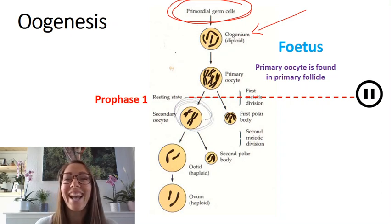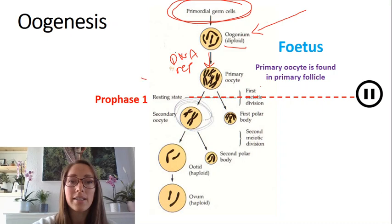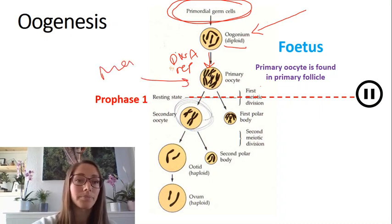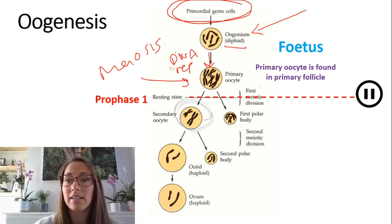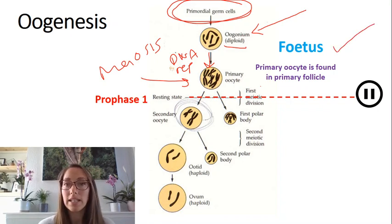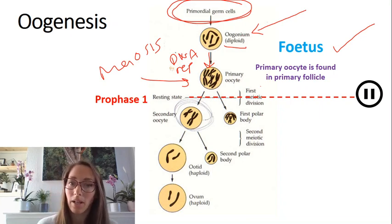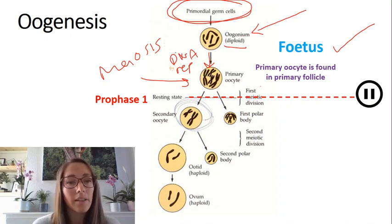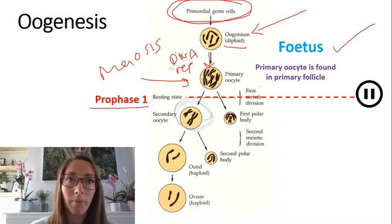Meiosis actually starts in the fetus. Female fetuses contain all of their primary oocytes before they are born, but meiosis is paused in prophase 1. So the fetus would contain all of its primary oocytes, all paused at prophase 1 of meiosis 1.